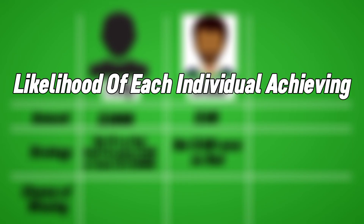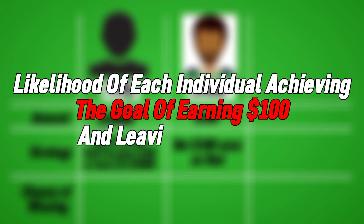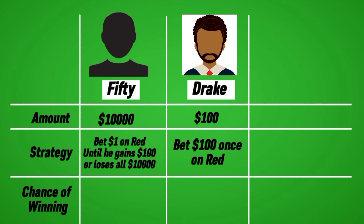Now let's assess the likelihood of each individual achieving the goal of earning $100 and leaving the casino. Drake faces approximately a 47.4% chance of securing the $100 while also confronting a 52.6% chance of losing everything. Since he is making a single bet, the computation is straightforward. 50, in contrast, faces significantly lower odds for the same objective, with nearly the entire $10,000 expected to be depleted before reaching $100.